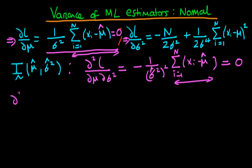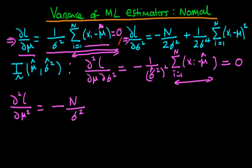The first diagonal element is d²L over d mu squared, which is just differentiating the expression with respect to mu again. If we do that, all we're going to get is minus n over sigma squared, because when we differentiate that bracket, mu just contributes a 1, giving us n terms each contributing minus 1. If we then substitute in our estimator for sigma squared, we get minus n over sigma hat squared. So that's the first diagonal element.